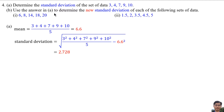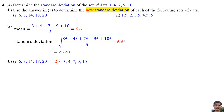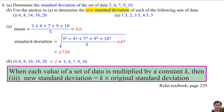Part B: Use the answer in Part A to determine the new standard deviation for each of the following sets of data. Number 1: the data is 6, 8, 14, 18, and 20. We find that this data equals 2 times the original data. According to the textbook page 229, when each value is multiplied by constant k, the new standard deviation equals k times the original standard deviation. So the new standard deviation equals 2 times 2.728, which equals 5.456.